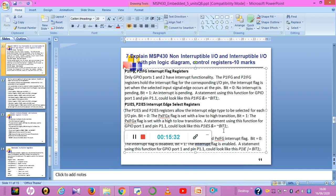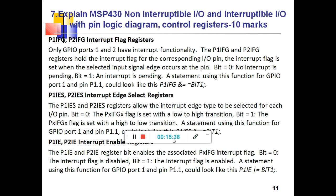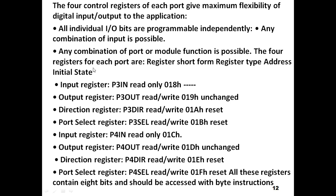When the interrupt flag is enabled, you can write the statement using P1IE OR with bit 1. The control registers for port 3 and port 4 include interrupt registers, output registers, direction registers, and port select registers for port 3, which give input, output, direction, and selection to perform read and write operations. The same applies for port 4. All these registers contain 8 bits and should be accessed with byte instructions.